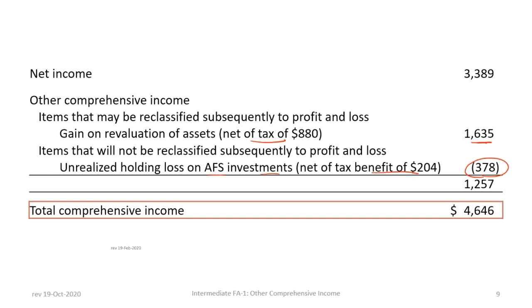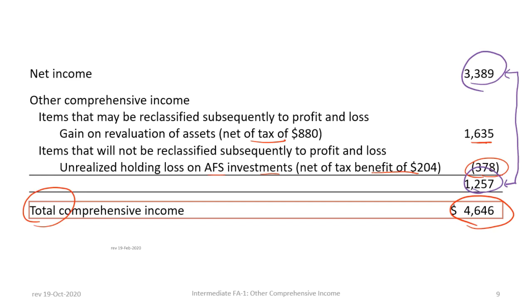Combining the $1,257,000 OCI with the net income of $3,389,000 gives us total comprehensive income — that is what we call it when we combine net income and other comprehensive income — totaling $4,646,000.